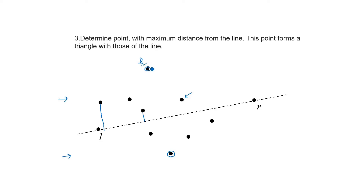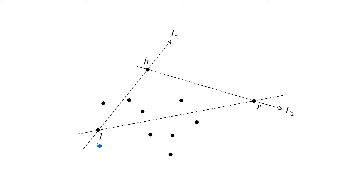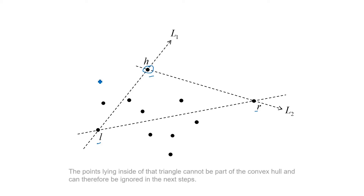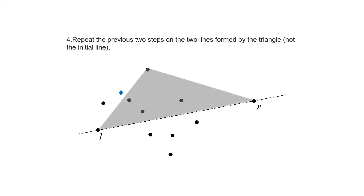Let us denote the extreme point of the upper half as H. It's clear that the points inside the triangle LHR will not be part of the convex hull. We then check the left side of line LH and the left side of line HR for extreme points. To minimize computation, we mark the points inside the triangle. We repeat the process of finding maximum distance points for every subproblem.